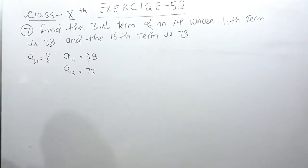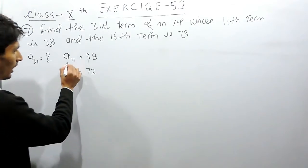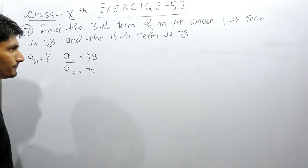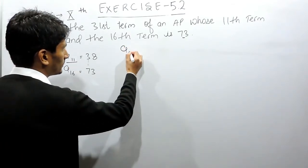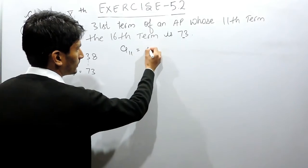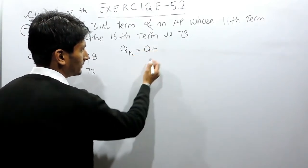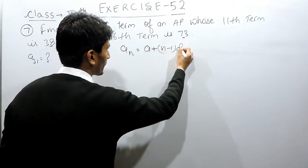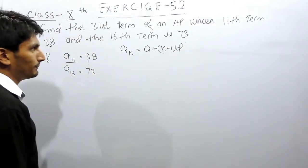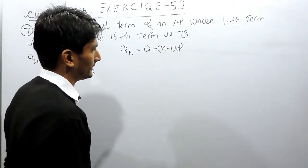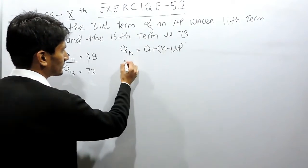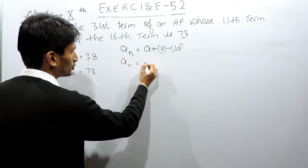We have to find out the 31st term. How to find the 11th term? We know that if you want to find nth term there is a formula: the nth term is equals to a plus n minus 1 times d.